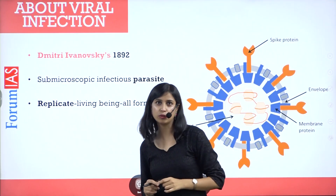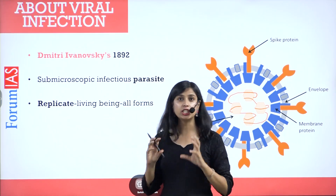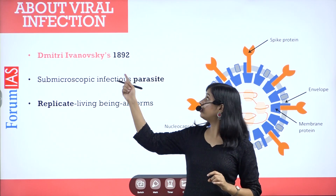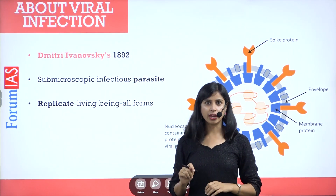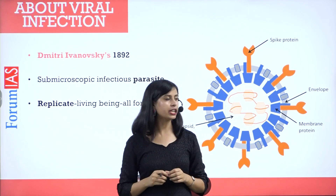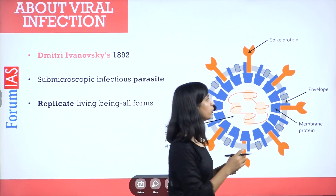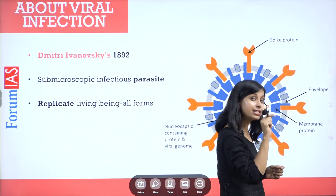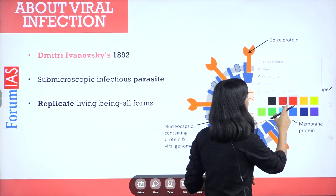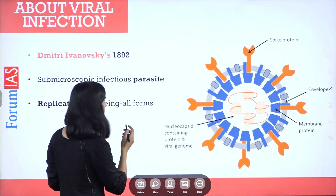First, let's understand what a virus is. A virus is a sub-microscopic infectious parasite. This was discovered by Russian botanist Dmitry Ivanovsky in 1892 — a fact you can be asked in a PCS exam. A parasite agent is one that needs another body to replicate and sustain itself. Those who sustain themselves on another body are called parasites — they can't sustain themselves for living on their own.